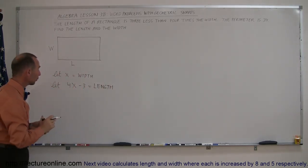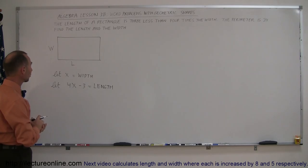Alright, so now that we have both the width and the length expressed in terms of x, we can now go ahead and use the information. They tell us that the perimeter is 34.